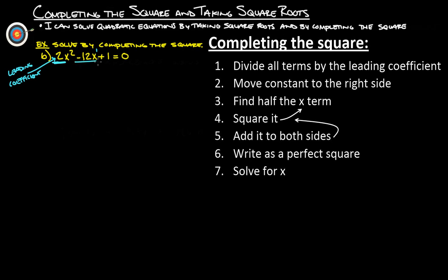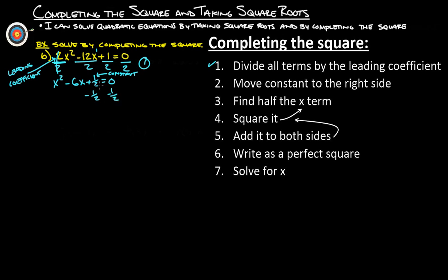After dividing by two, we get x squared minus six x plus one half equals zero. That was step one. Step two: move the constant to the right side. The constant is the term without an x. We subtract one half from both sides, giving us x squared minus six x equals negative one half. We leave a space on the left side for later.